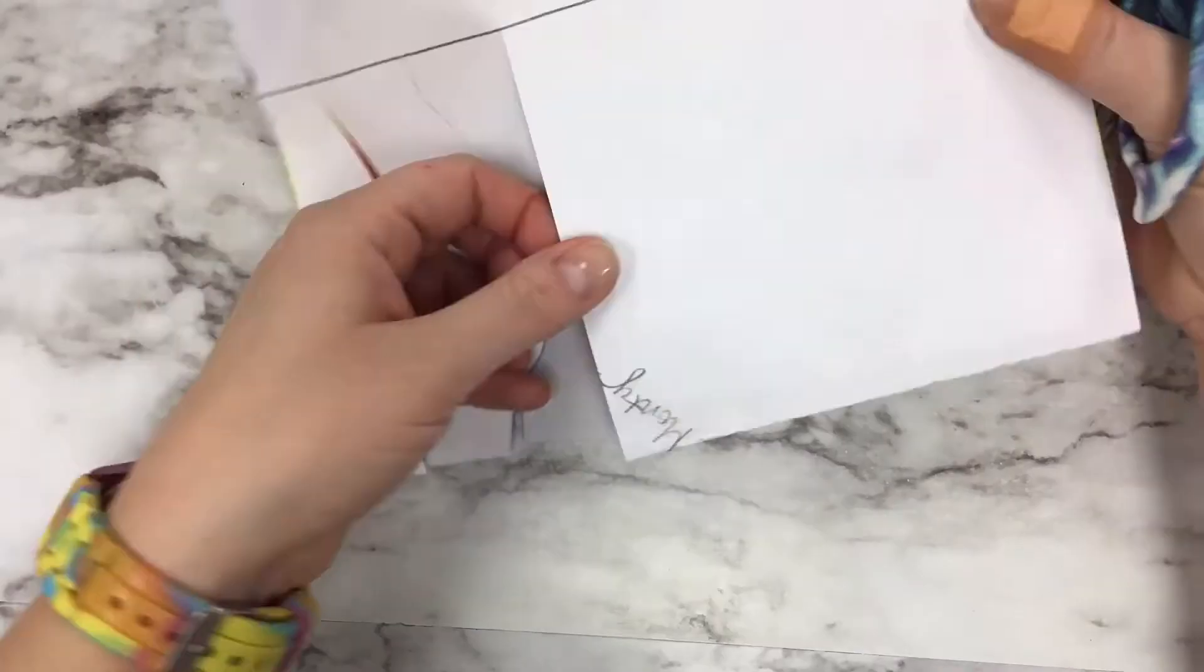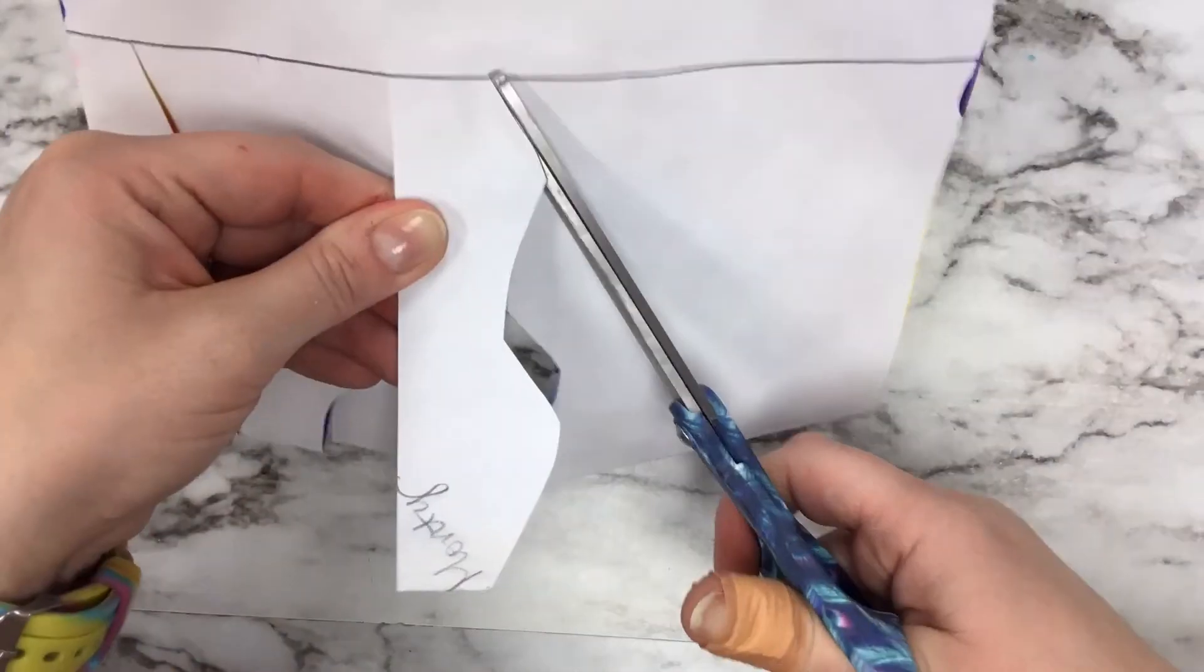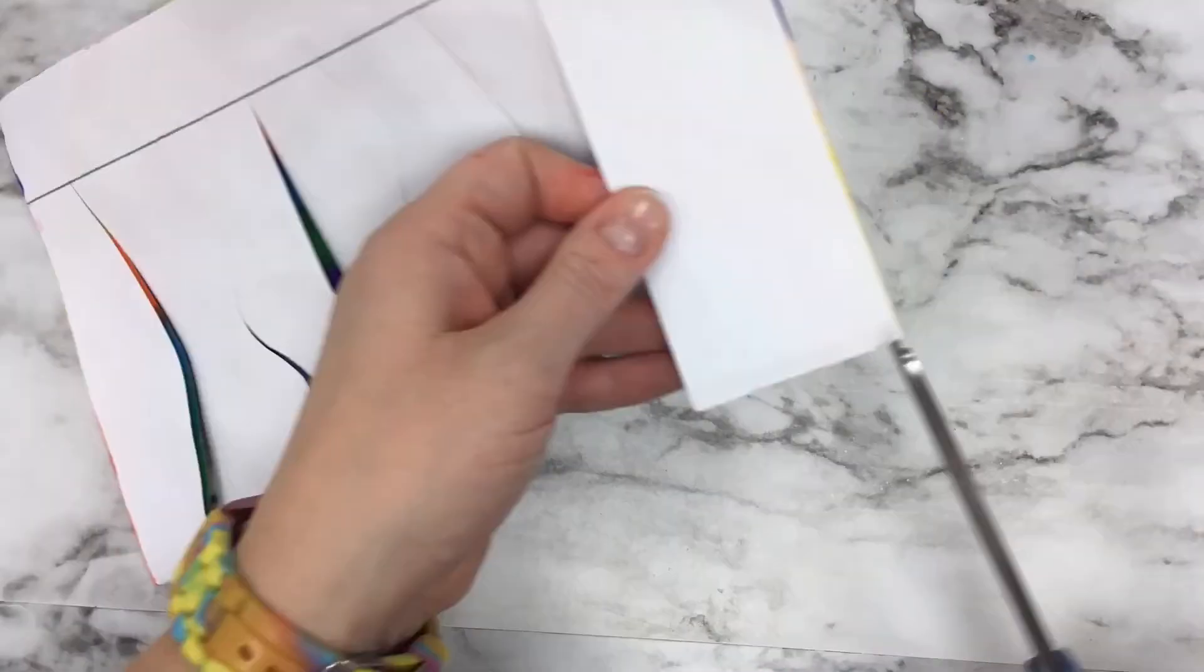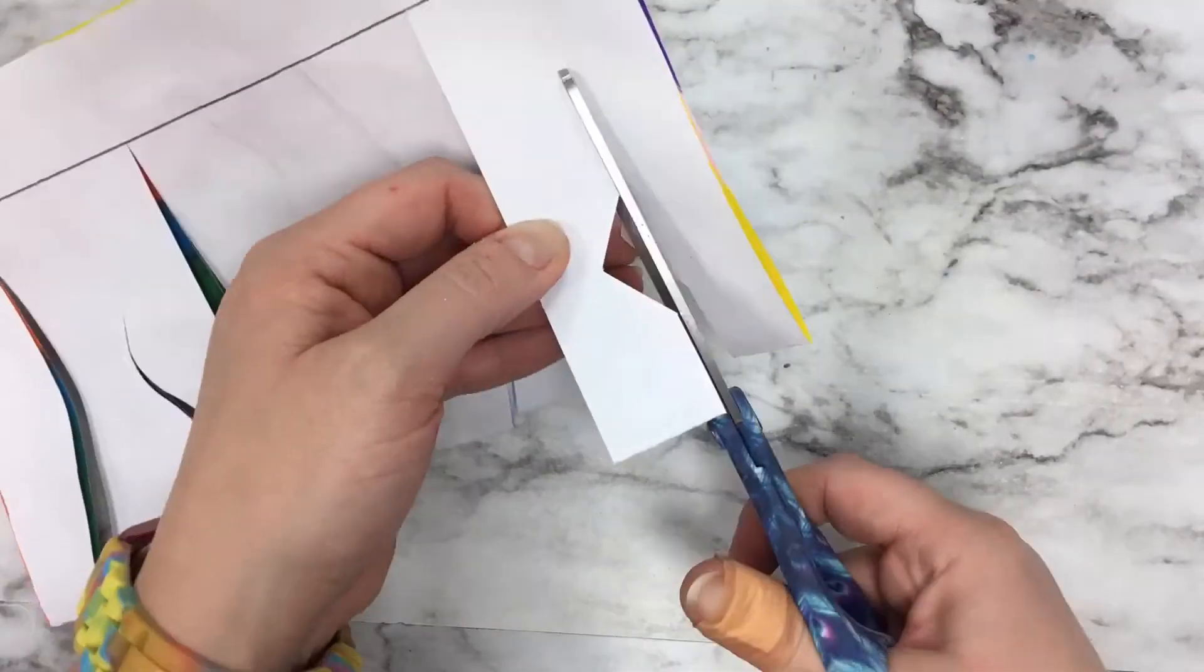You're going to cut seven or eight strips along your loom starting at the folded edge and these can be a variety of different types of lines or you can do the same line over and over again.